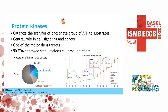Protein kinases catalyze the transfer of a phosphate group from ATP to a substrate, and by doing so they act as molecular switches — they turn some processes on or off in cells. They also play a central role in cell signaling and diseases like cancer. They are currently one of the major drug targets along with GPCRs and ion channels, forming roughly 40% of human drug targets, and there are currently 50 FDA-approved small molecules on the market.